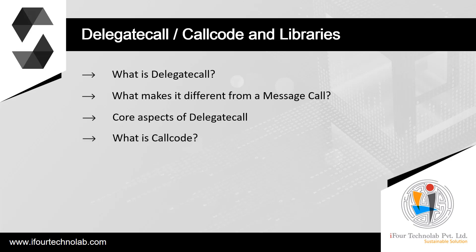What is call code? Delegate call was a new opcode that was a bug fix for call code, which did not preserve msg.sender and msg.value. If John invokes Robert, who does a delegate call to Jane, the msg.sender in the delegate call is John; whereas if call code was used, the msg.sender would be Robert.